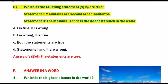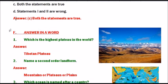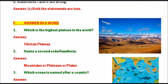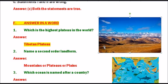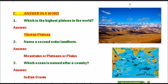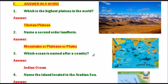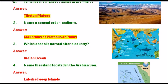Moving to question F: Answer in a word. Question 1: Which is the highest plateau in the world? The answer is the Tibetan Plateau. Tibetan Plateau is the highest plateau in the world, as shown in the picture. Question 2: Name a second order landform. Answer: mountains, plateaus or plains. Question 3: Which ocean is named after our country? It is the Indian Ocean, named after India.